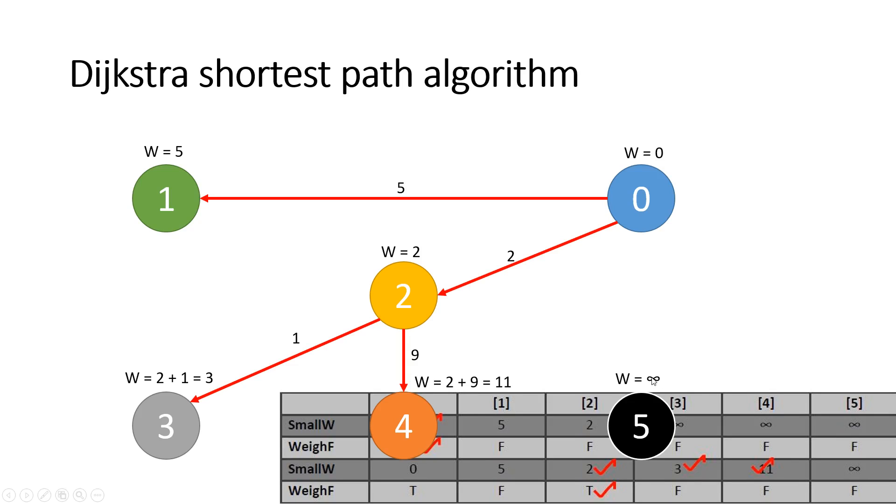Okay, the weight 5 still remains as infinity because we've got no direct access to it. All right, and yeah this one still remains 5. So now we realize that the next only available node from node 0 is node 1 and that's got a weight of 5.